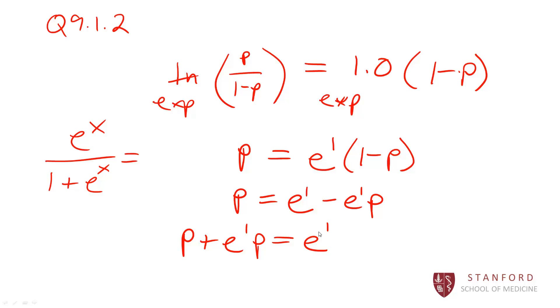And then we were trying to isolate here what's the probability. So I'm going to do p plus e raised to 1 times p is equal to e. I'm just adding that to both sides of the equation. Then I can divide out here, this is equal to p times 1 plus e raised to 1.